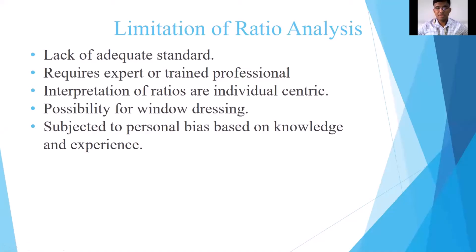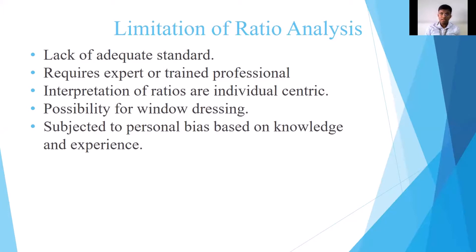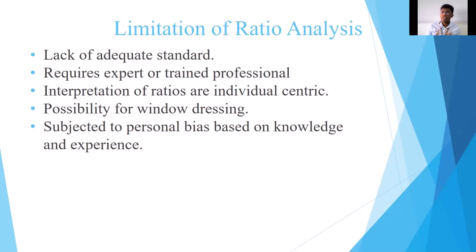Now we will discuss five limitations of ratio analysis. The first limitation is lack of adequate standards. For most ratios, there are no baseline values defined. For example, the standard value of current ratio is two — below two indicates the company is not doing well, above two indicates it's doing well. However, for the majority of ratios, no well-defined standards are available, making it very difficult to rely on the interpretations of those values.